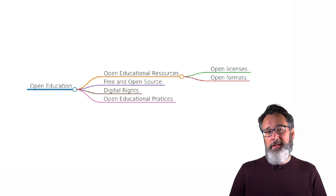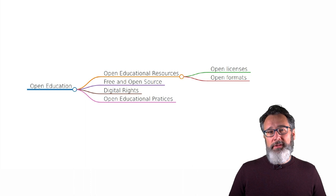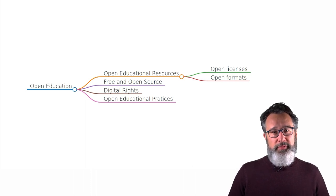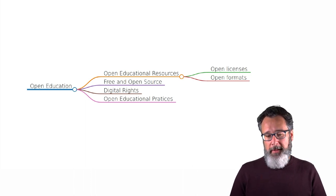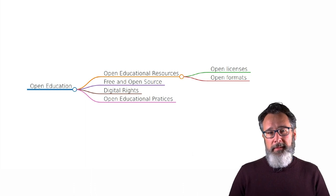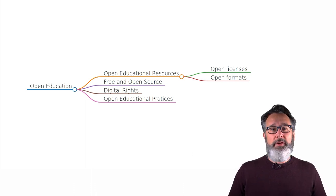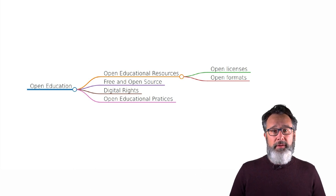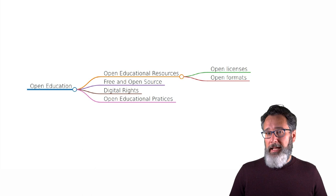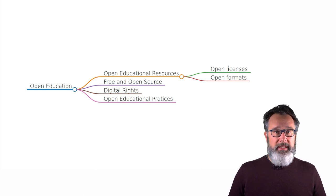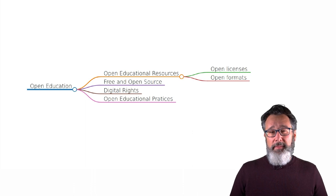If you look at the field of open education and we think about what makes open educational resources particularly interesting and different from traditional educational resources, there are basically two characteristics. The first one is that we use open licenses. We give legal permissions for people to do a variety of things with our resources, including being able to download the resource, make changes to it, translate it, post it somewhere else — giving a lot of flexibility to use and manipulate these resources.